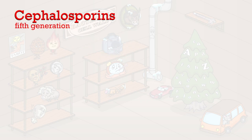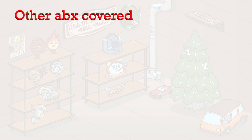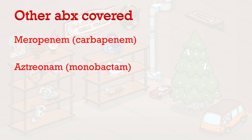An example of a fifth generation cephalosporin is the tarot card poster on the wall, representing ceftaroline. Other important drugs that target bacterial cell walls include meropenem, aztreonam, and vancomycin.